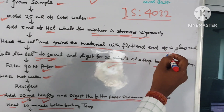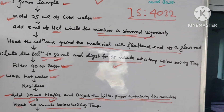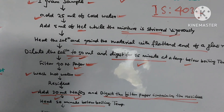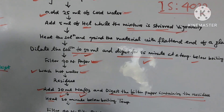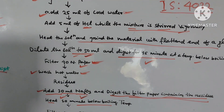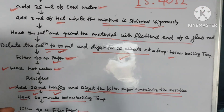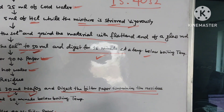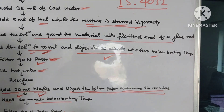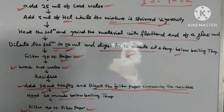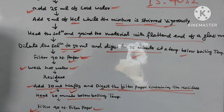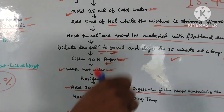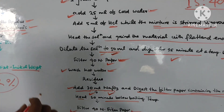Then heat the solution and grind the material with the flattened end of a glass rod. Suppose we are taking the sample of clinker - there may be small and big size particles. You have to break and grind the particles using the flattened end of a glass rod. If the solution is properly mixed, the result will be perfect.